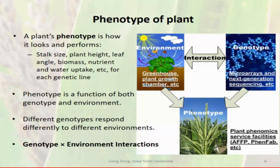So what are the phenotypes of a plant? Basically, it's about how a plant looks and how a plant performs. How it looks includes stock size, plant height, leaf angle, and biomass. How it performs is about how plants uptake nutrients and water. Phenotype is a function of both genotype and environment, and their interaction is really complicated.